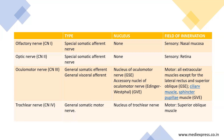The oculomotor nerve is a general somatic efferent nerve as well as a general visceral efferent nerve. The nuclei to remember are the nucleus of the oculomotor nerve and the accessory nuclei of the oculomotor nerve, that is the Edinger-Westphal nucleus. The general somatic efferent component corresponds to the oculomotor nucleus and the general visceral efferent component corresponds to the Edinger-Westphal nucleus.